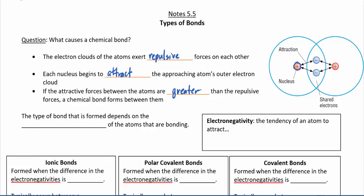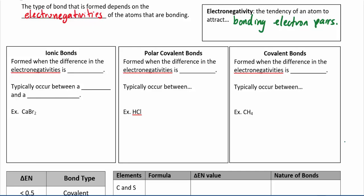There are different types of bonds, and the type of bond formed in every case depends on the electronegativities of the atoms doing the bonding. We talked briefly about electronegativity when we looked at periodic trends. Electronegativity is basically the tendency of an atom to attract bonding electron pairs — or less precisely, how greedy the atom is in pulling electrons towards itself. Different atoms have different levels of this greediness.